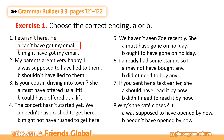Number 2: My parents aren't very happy. I shouldn't have lied to them — Ba mẹ tôi không có được vui. Tôi đáng lẽ ra không nên nói dối với họ. Shouldn't have được dùng để thể hiện một hành vi mà chúng ta cho rằng sai. Number 3: Is your cousin driving into town? She could have offered us a lift — Anh em họ của bạn không phải đang lái xe vào thị trấn hay sao? Cô ấy có thể đã cho chúng tôi đi nhờ. Với câu cảm thán thì mình sẽ dùng could have để nói về ý nghĩ của mình rằng một người nào đó nên làm một hành động nào đó.